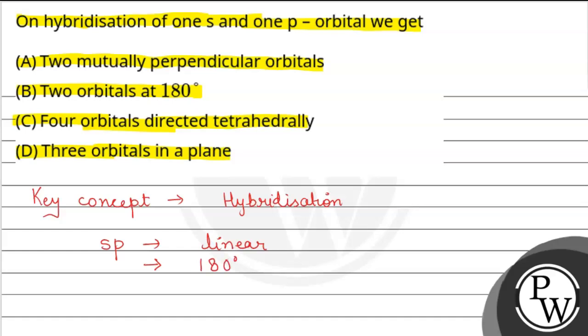So, the question is, on hybridization of 1s and 1p orbital. So, see, this is our s orbital and this is our p orbital. This is our p orbital.